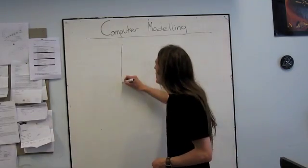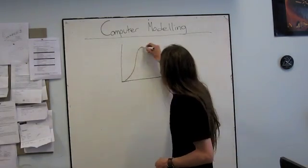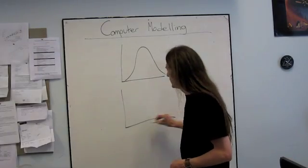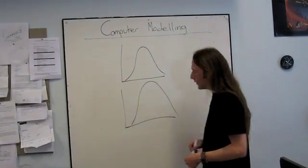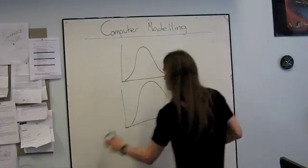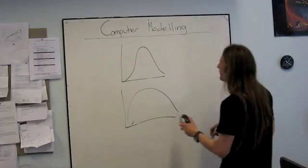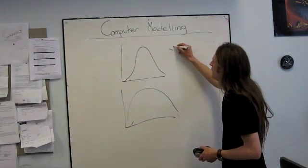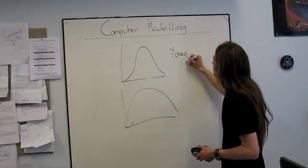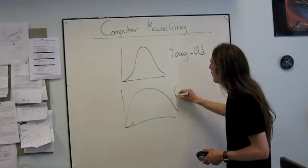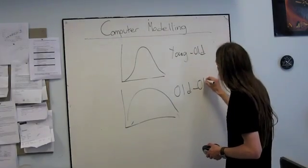So if you remember from the data they got, they had two lots of functions. They had a young-old group and an old-old group.